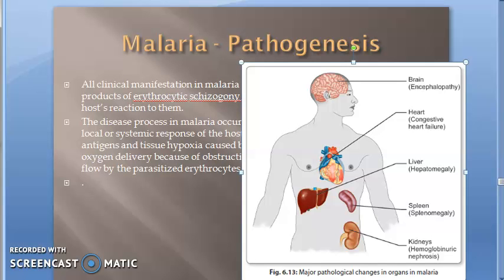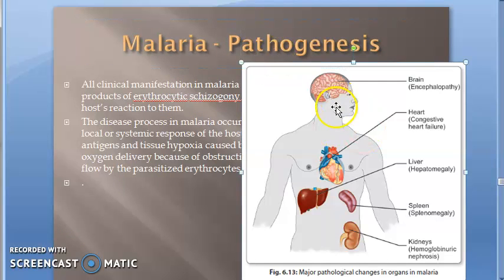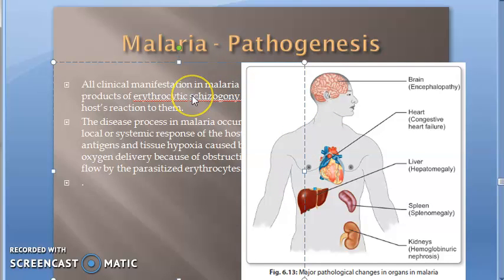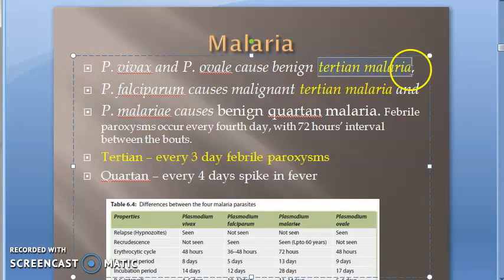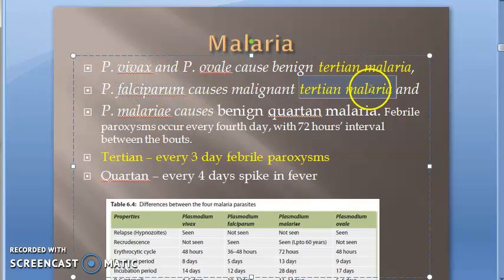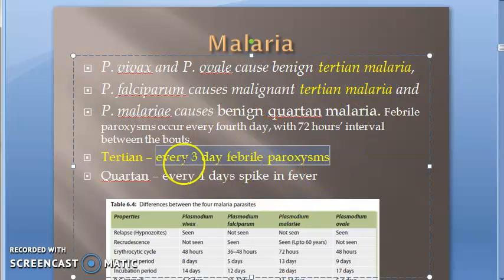In this video we want to look at the pathogenesis of malaria — more so the clinical features and pathological changes. Tertian malaria, that is vivax and falciparum, both cause tertian malaria. Tertian malaria means every third day there will be febrile paroxysms, with a 48-hour interval between the bouts.